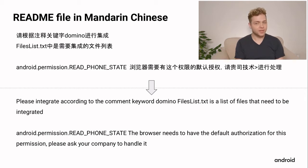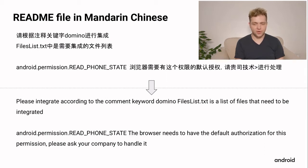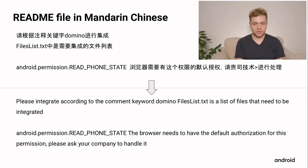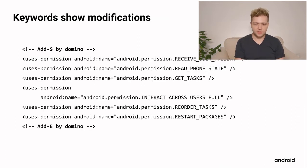The readme file is really useful. It's written in Mandarin Chinese, and when translated it reads: 'please integrate according to the comment keyword Domino. FileList.txt is a list of files that need to be integrated. The read phone state permission is needed by the browser, so please ask your company to handle it.' What they mean is that this permission has to be pre-granted to the browser app. OEMs have the ability to pre-grant permissions — similar to how the phone app doesn't prompt the user for microphone permission because it's an obvious requirement.